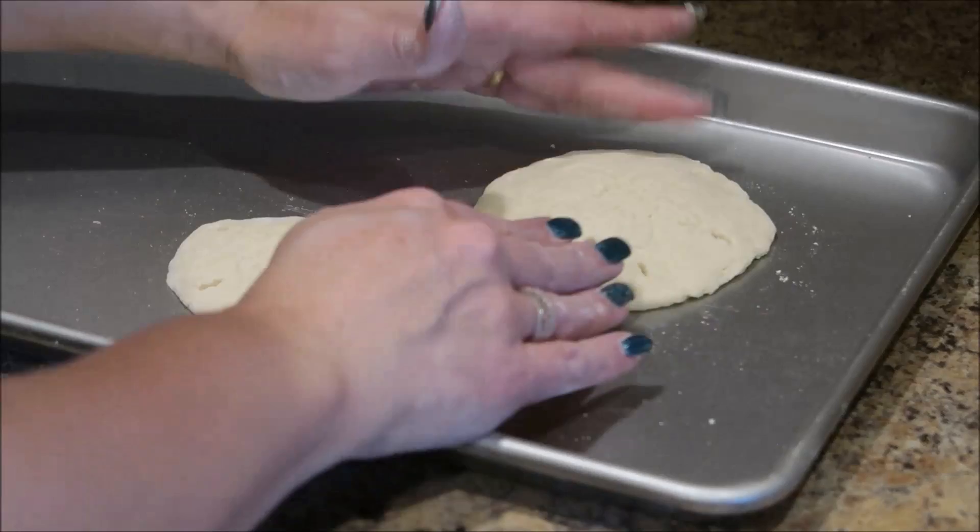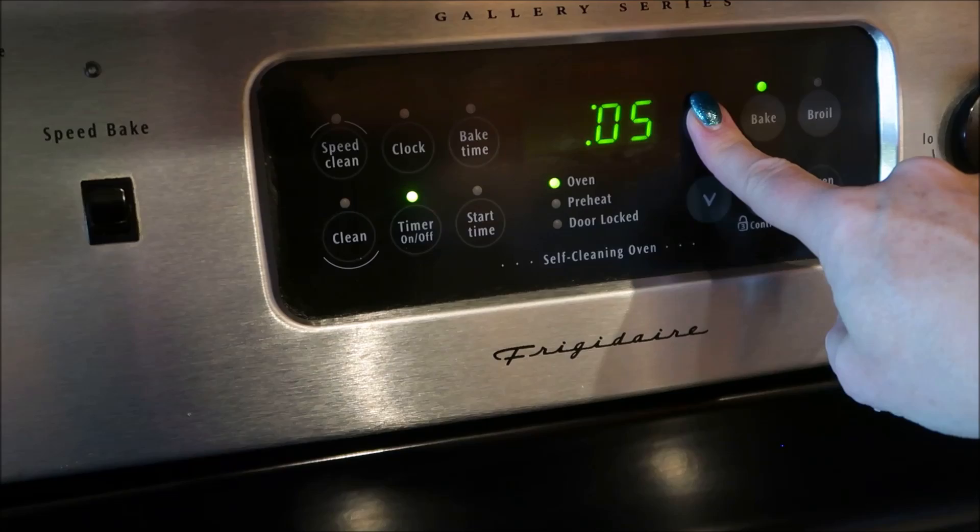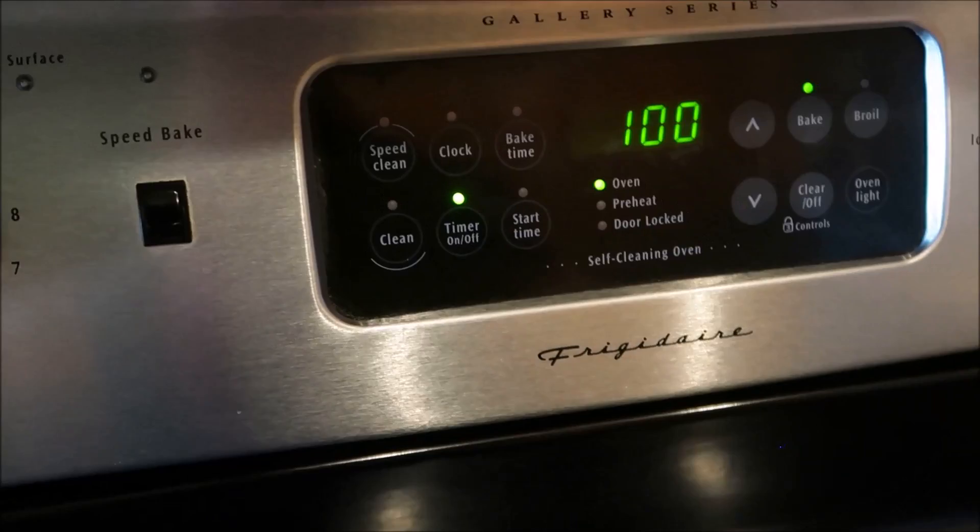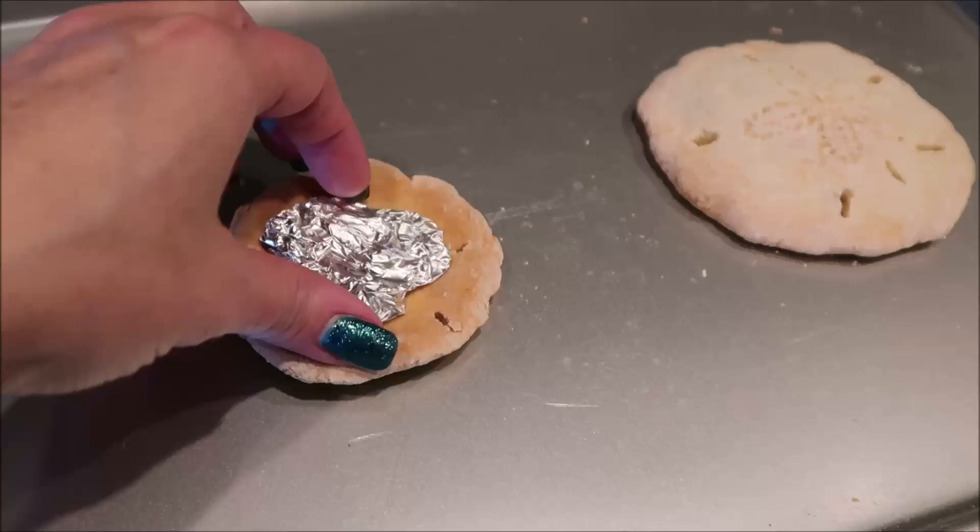I baked these at 325 for one hour. And actually it was a little bit too warm, I think, because they came out a little bit dark. They came out a little bit brown around the edges and they're pretty brown on the underside. So turning the temperature down would probably be best. So once they're cooled, you can just pull that aluminum foil off of the back side of them. And then I'm going to paint them.